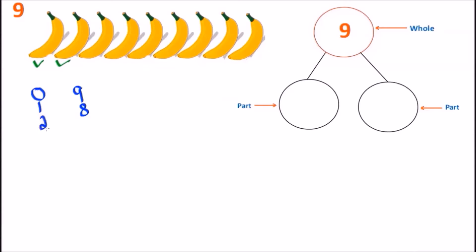Let's look at the bananas again: one and two. So we have the number two as one part. Now how many bananas remain? One, two, three, four, five, six, and seven — we have seven bananas. So we have a two on the left side of our number bond and a seven on the right side. Two and seven give us the number nine.